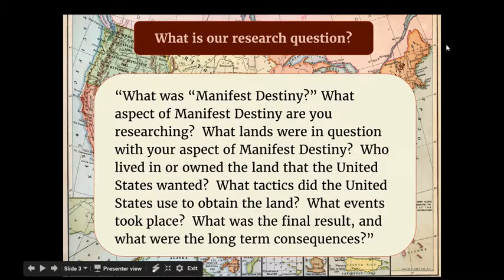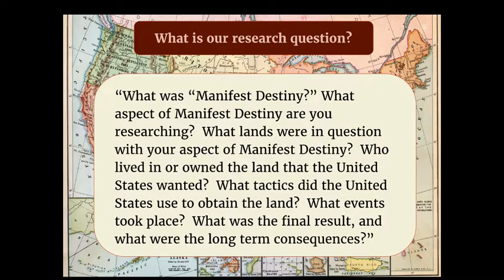This is our research question, otherwise known as the prompt — this is what you are going to be answering with your paper. What was Manifest Destiny? What aspect of Manifest Destiny are you researching? What lands were in question? Who lived in or owned the land that the United States wanted? What tactics did the United States use to obtain the land? What events took place? What was the final result? And what were the long-term consequences? This is a very long prompt, and each of these questions will be answered with specific paragraphs in your paper.